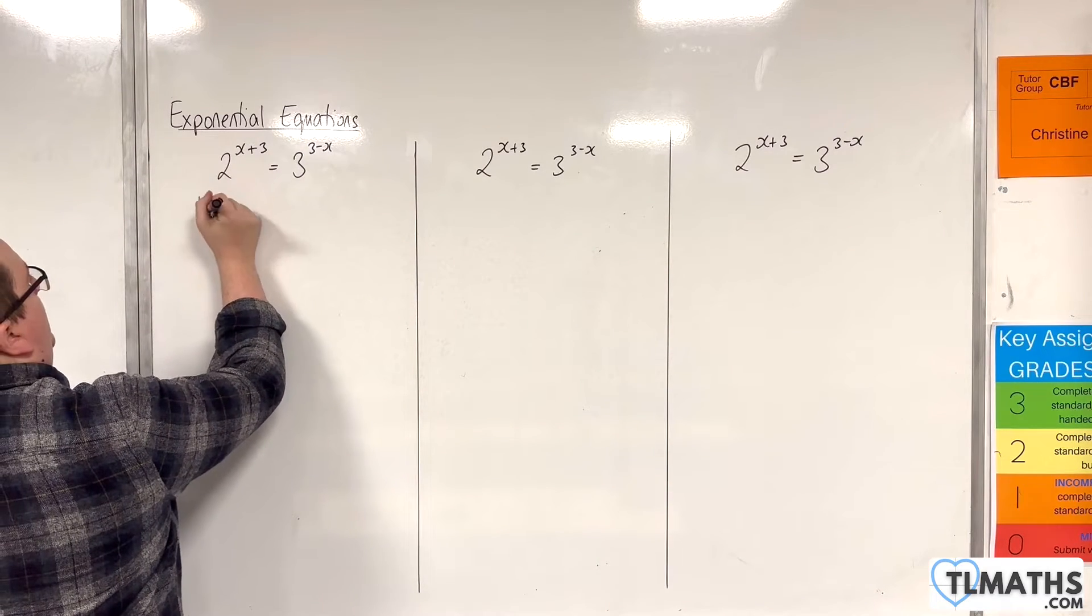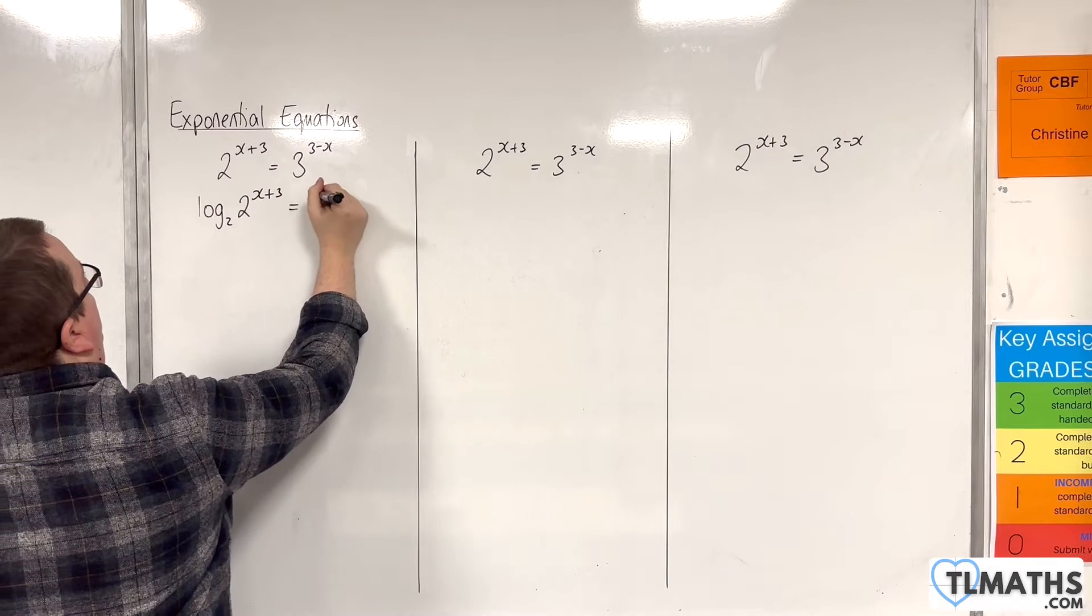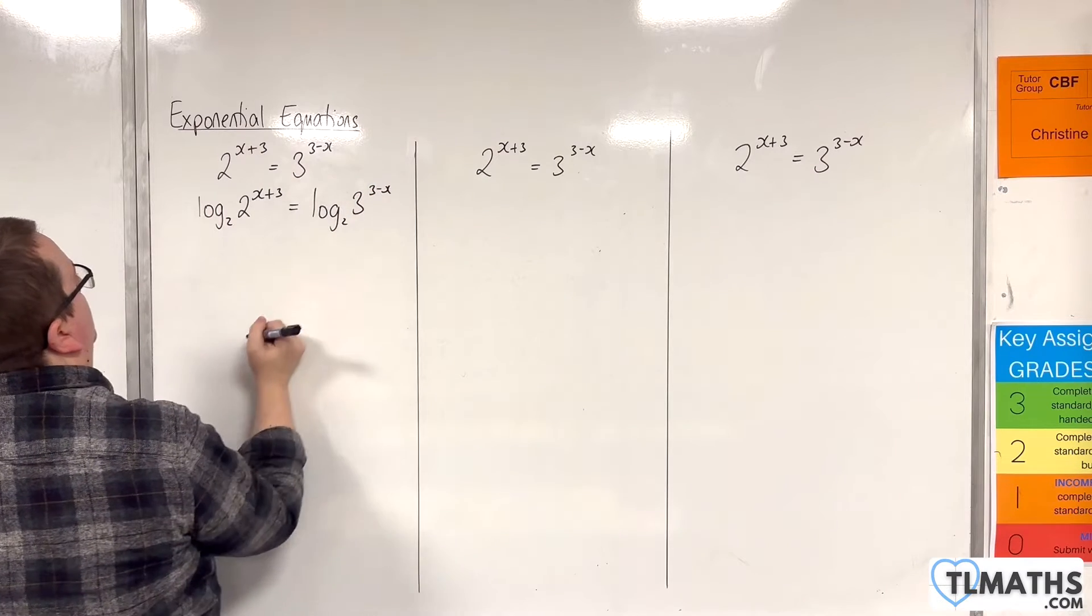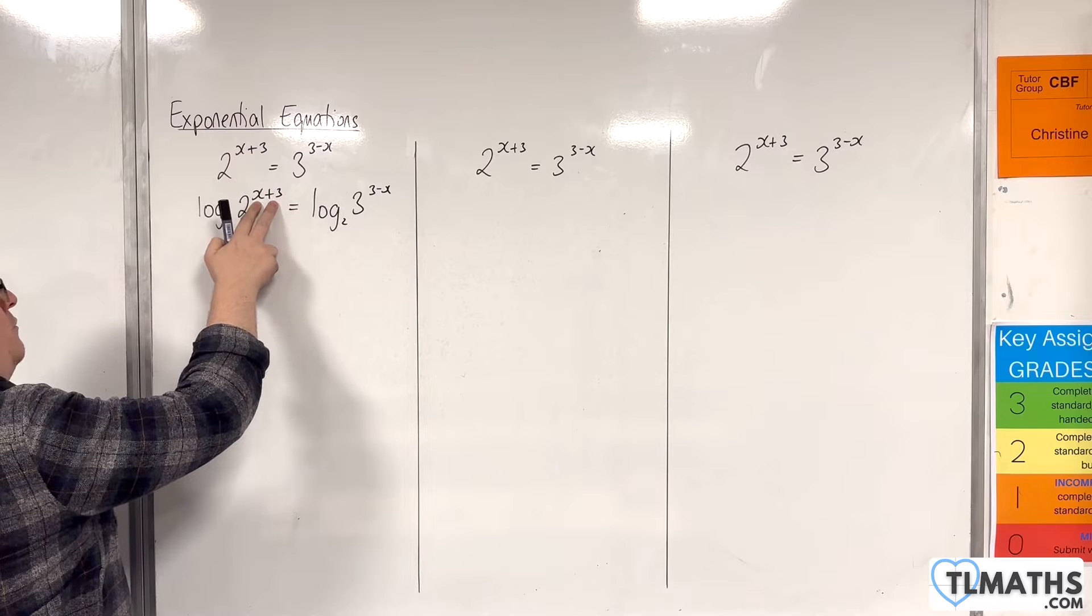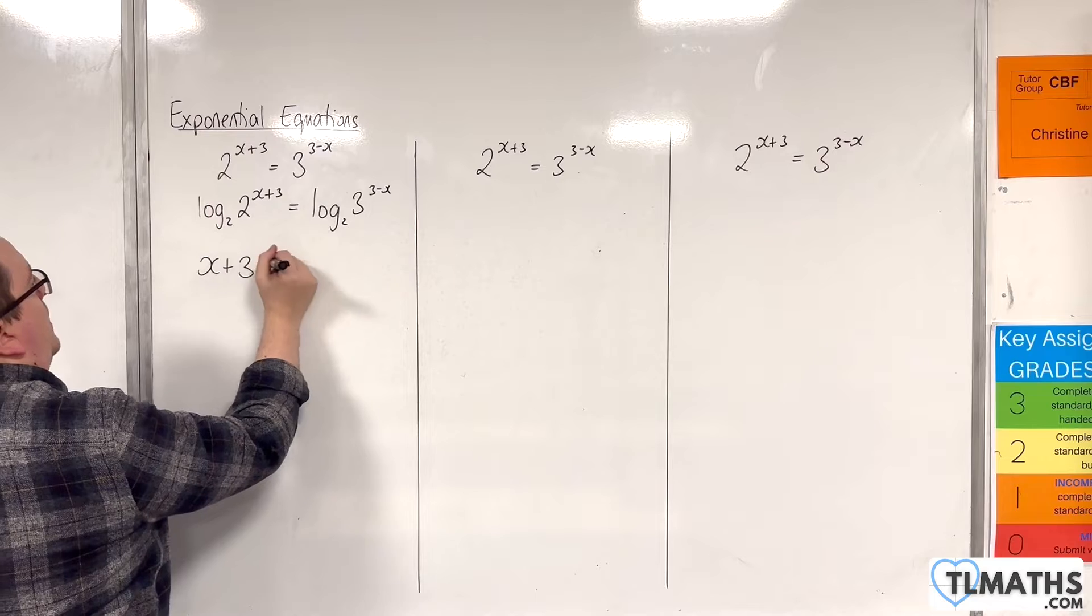So, we're going to have log base 2 of 2 to the x plus 3 is equal to log base 2 of 3 to the 3 minus x. Now, here we've got log base b of b to the power of x, or x plus 3 in this case. And so, that is just x plus 3.